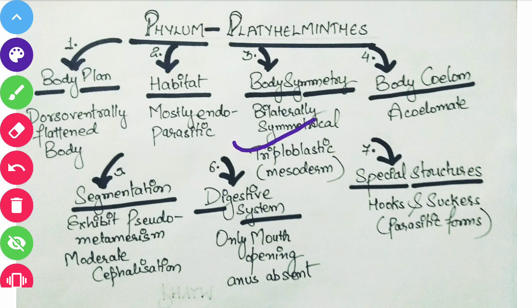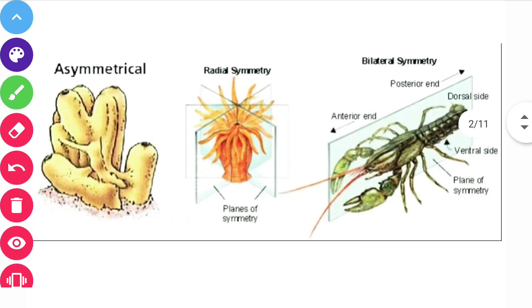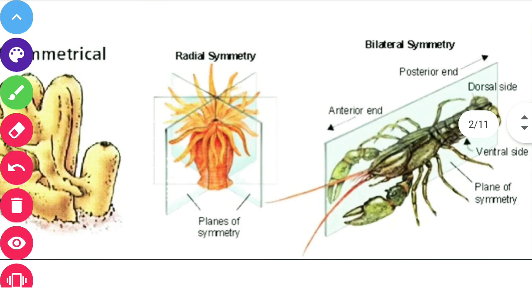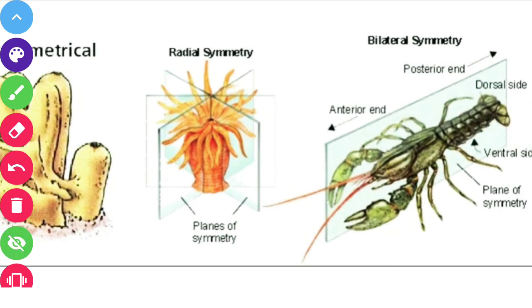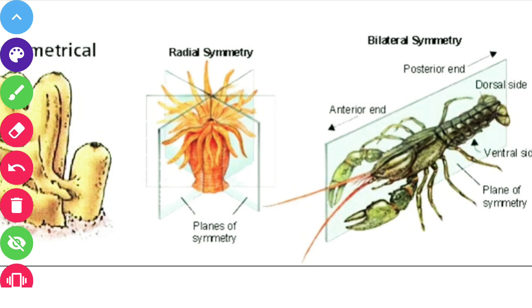Coming to body symmetry, they have bilateral body symmetry as well as they are triploblastic organisms. Bilateral symmetry means when any plane passes through the anterior to posterior central axis — the sagittal axis — the animal is divided into two equal halves, one part on each side. This is known as bilateral symmetry.